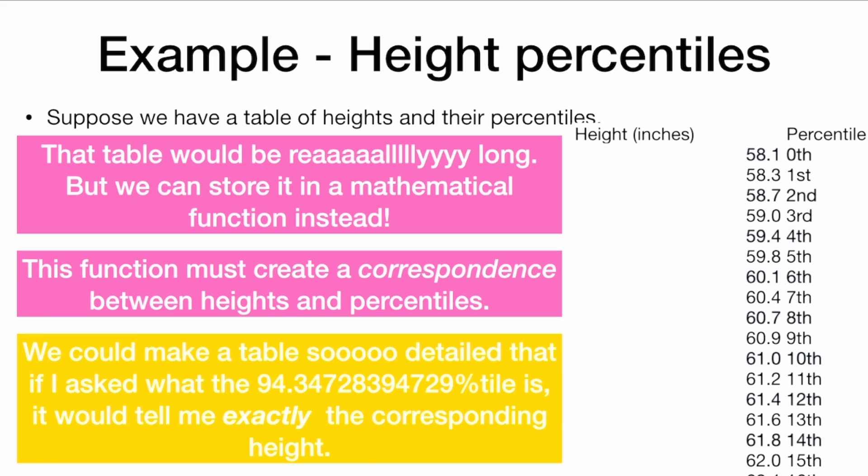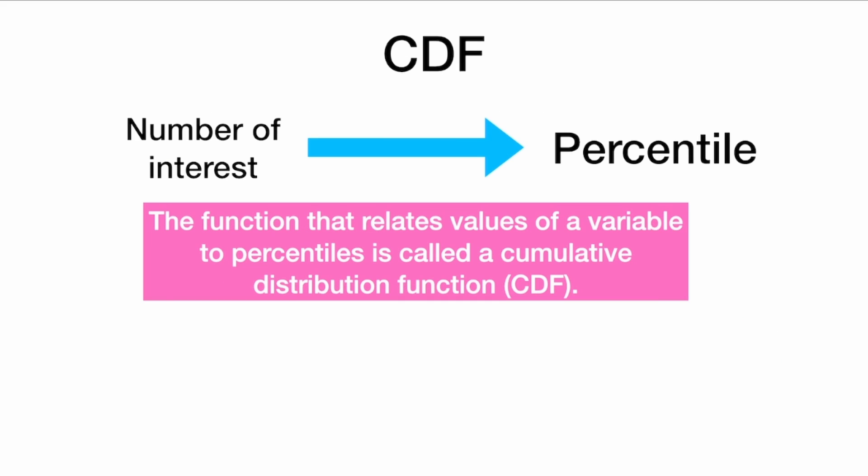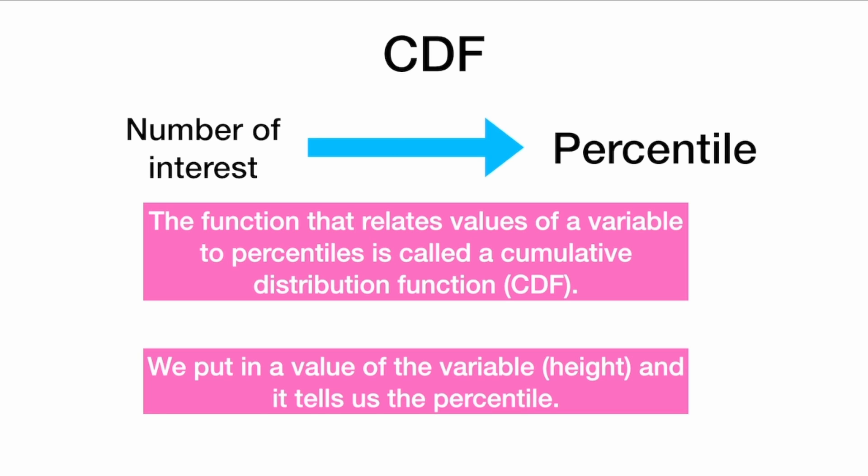This function must create a correspondence between heights and their percentiles. And the function that relates values of a variable to percentiles is called the cumulative distribution function, or the CDF. In a CDF, you put in a number of interest, like height, and it spits out the percentile. So we put in a value of a variable, and it tells us the percentile.